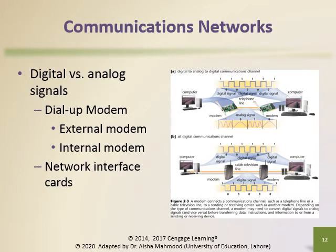Data signals are individual electrical pulses that computers use to represent data. Telephone equipment was originally designed to carry only voice transmission, which comprises a continuous electrical wave called an analog signal. For telephone lines to carry data, a communication device called a modem converts digital signals into analog signals. The word modem comes from the combination of the words modulate — meaning to change a digital signal into an analog signal — and demodulate — meaning to convert an analog signal into a digital signal.